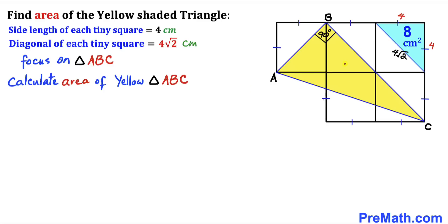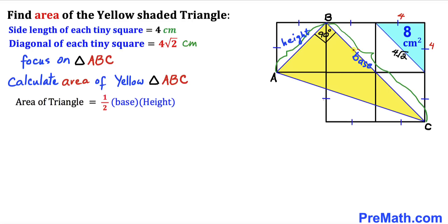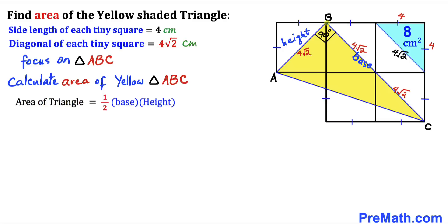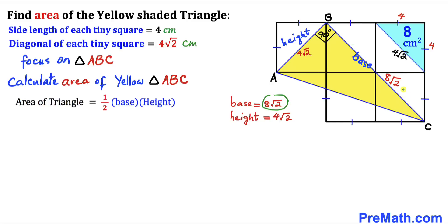We will now calculate the area of yellow triangle ABC using: area equals one half times base times height. Side BC is our base and side AB is our height. Each diagonal of the tiny square is 4√2, so the total base BC equals 4√2 plus 4√2, which gives us 8√2. Our height AB is 4√2.